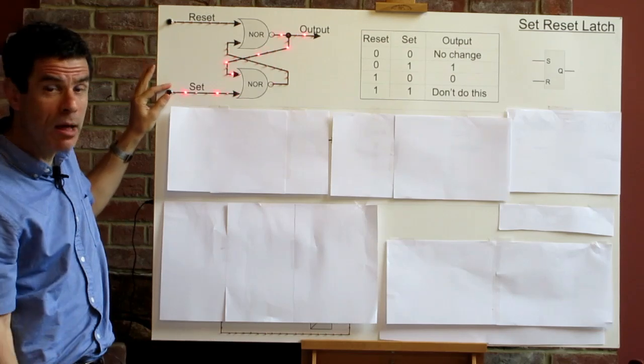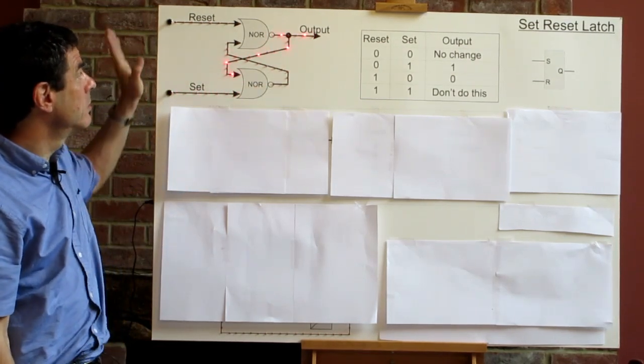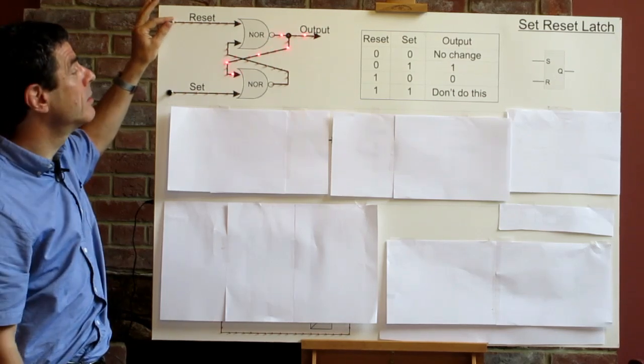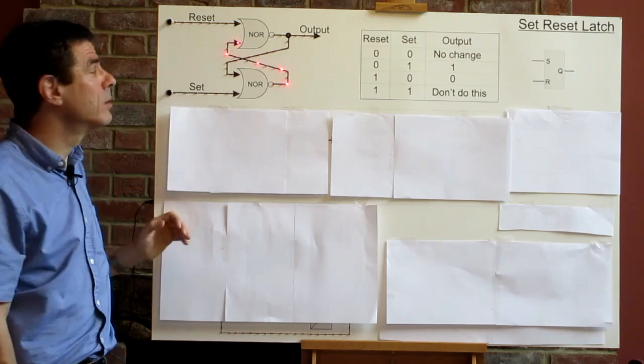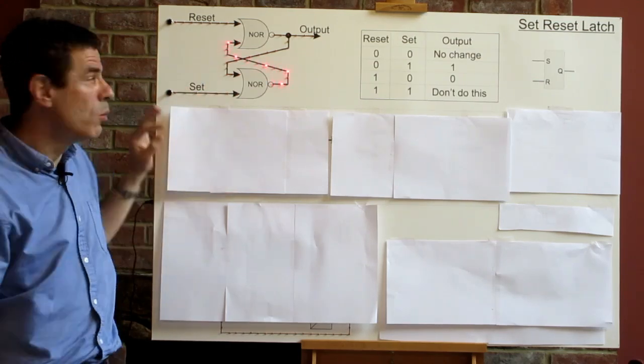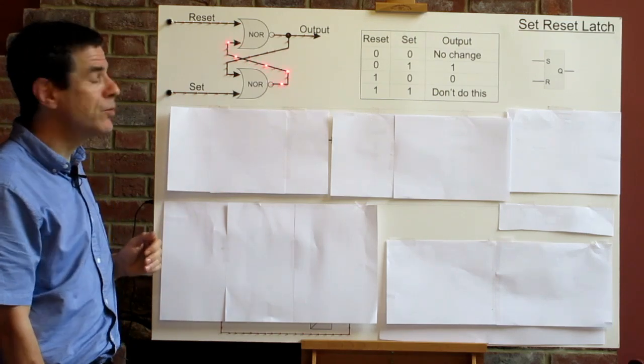If we take the set signal high, we get a high output. Again, if we take the reset high, it becomes low. So this is a simple memory element. It can remember which of these inputs was taken high most recently.